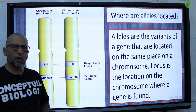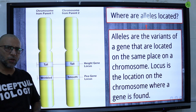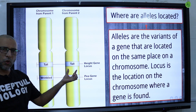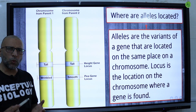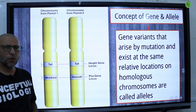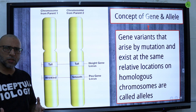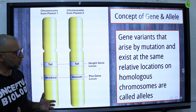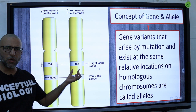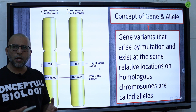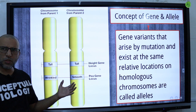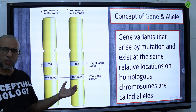Alleles are the variants of a gene and are located at the same place on a chromosome. The locus is the location on the chromosome where a gene or allele is present. Gene variants that arise by mutations and exist at the same relative locations on homologous chromosomes are called alleles. An allele is an alternative version of a specific gene, and new versions of old genes come into existence via mutations.